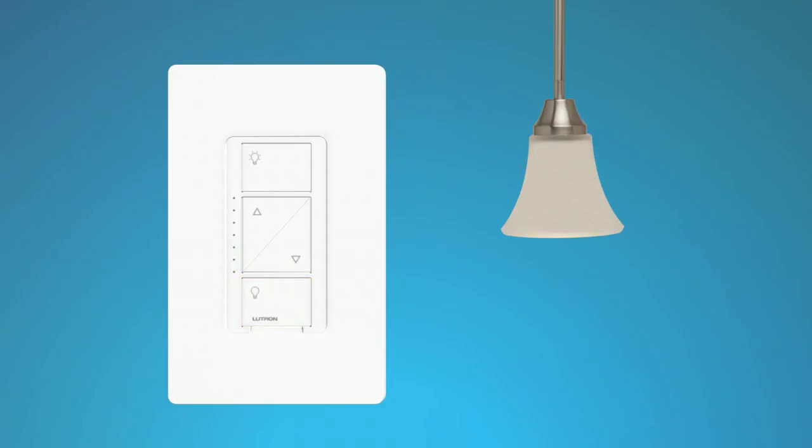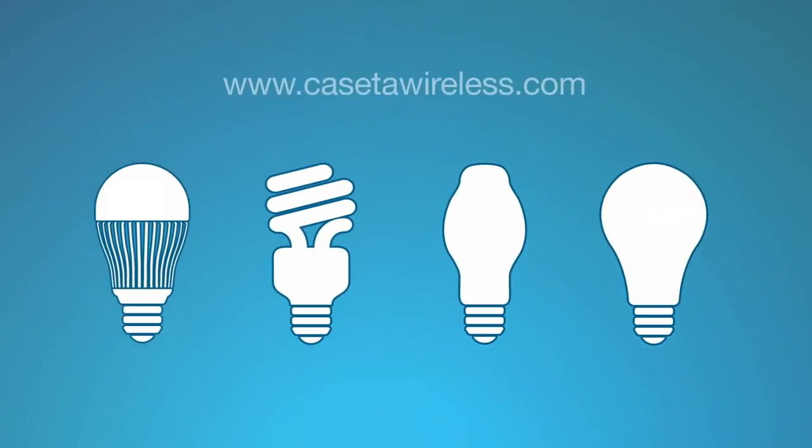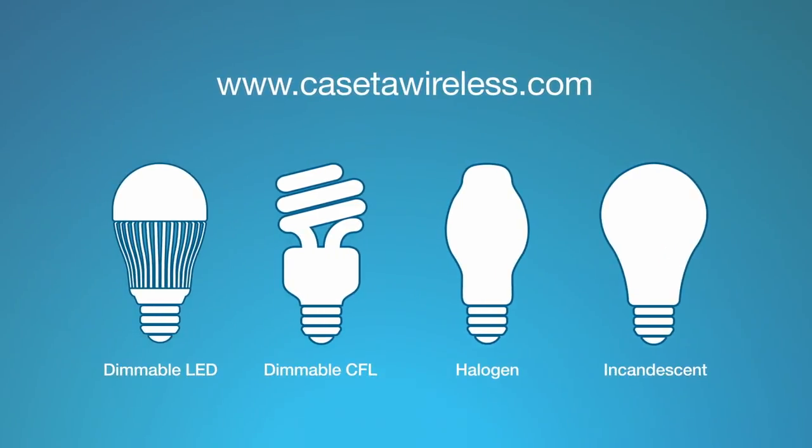Using either the dimmer or the Pico remote control, turn the lights on and adjust the level to test the dimming performance. Please see the Quick Start Guide on CasetaWireless.com prior to installation to make sure you don't exceed the maximum wattage if you mix and match bulbs.